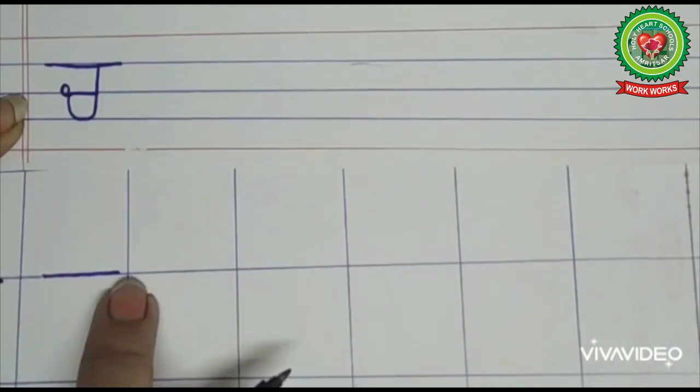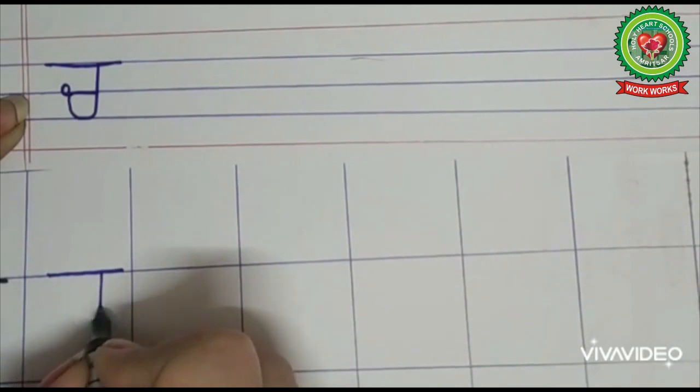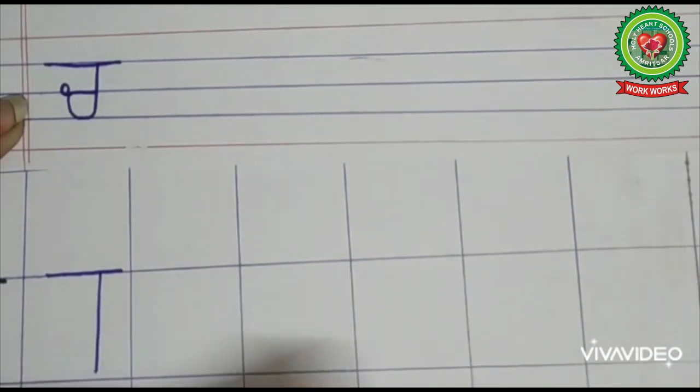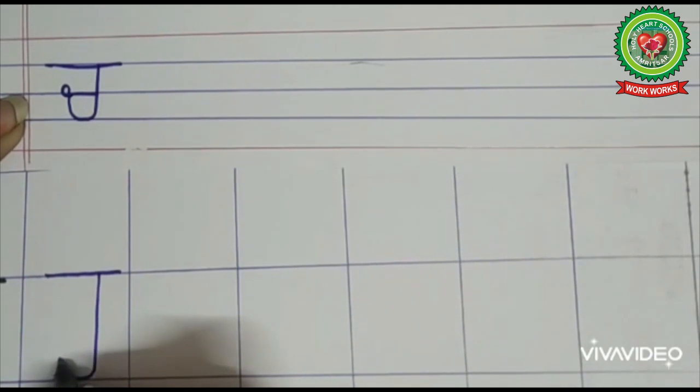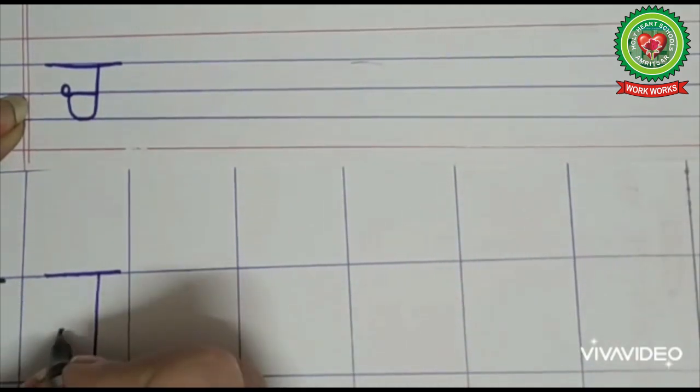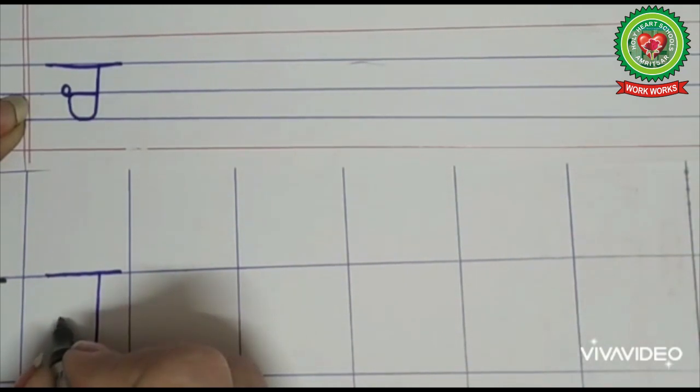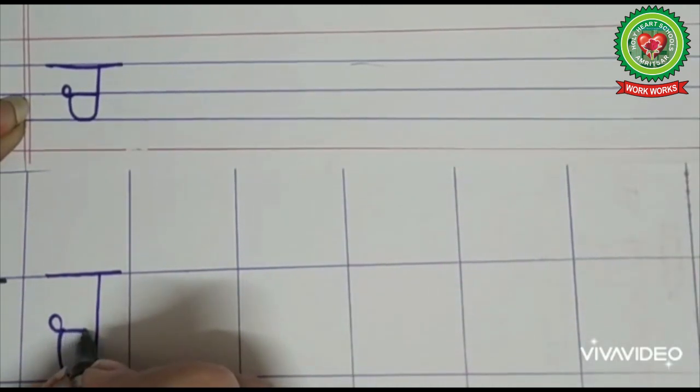And then we will draw a standing line, and from the edge of this standing line we will draw a curved line like this. And then we will round up the curve and draw a small slipping line like this. This is Chacha.